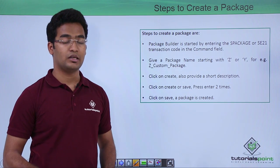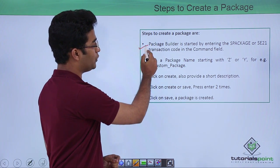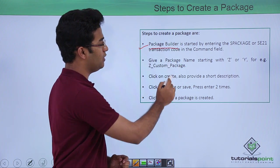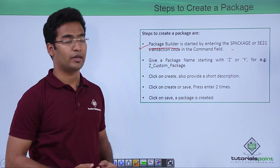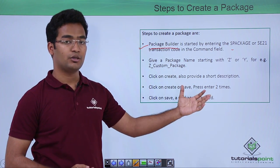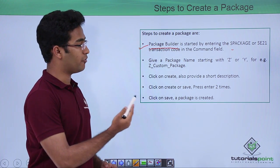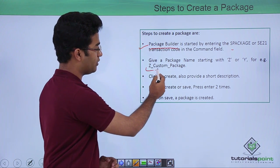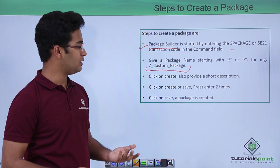Now in the next slide, we are seeing the steps to create a package. First we have to go to SC21 which is the package builder screen. We have the tcode SPACKAGE or SC21 we can provide. We have to provide a custom name starting with Z or Y. Here suppose this is the custom name that we are given, Z_CUSTOM_PACKAGE.